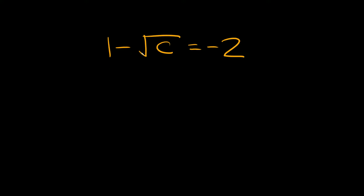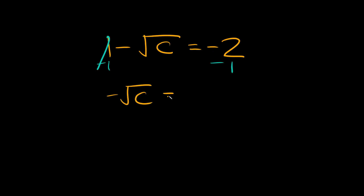Here we have 1 minus the square root of c is equal to negative 2. So the first thing we're going to do is get rid of the 1 by subtracting 1 from both sides. These cancel out, so on this side we're just left with the negative square root of c is equal to negative 2 minus 1, which is equal to negative 3.